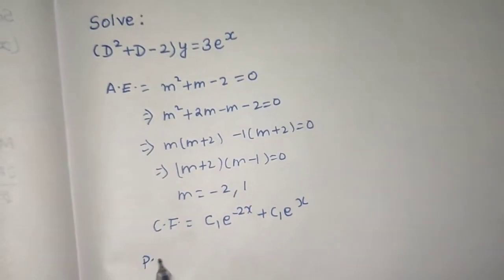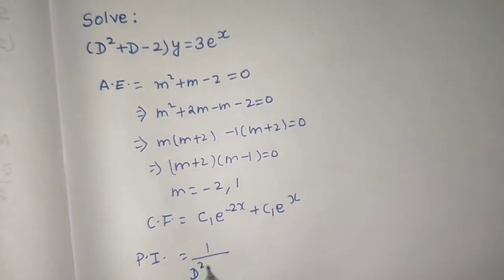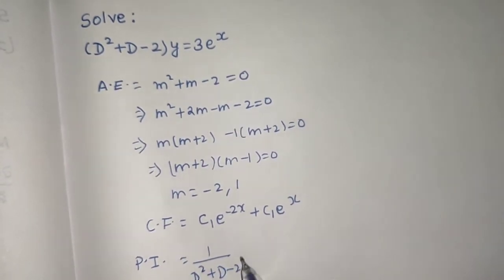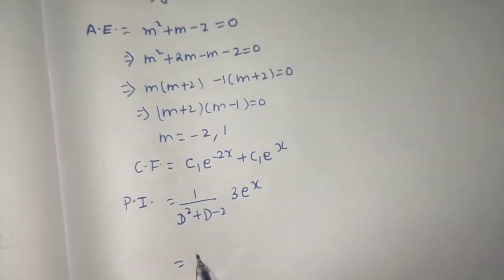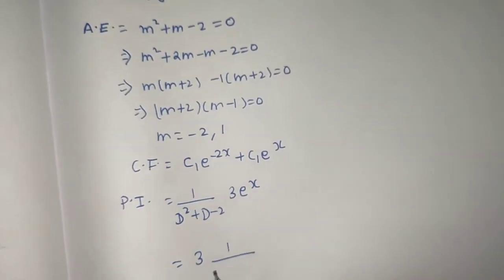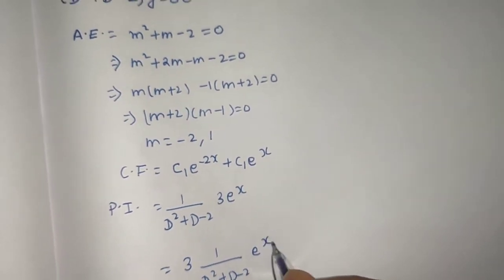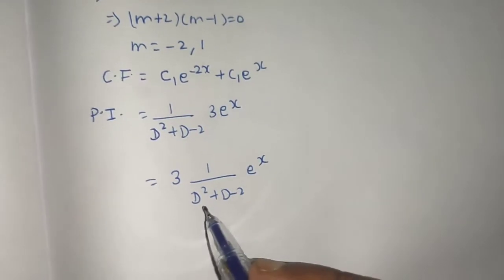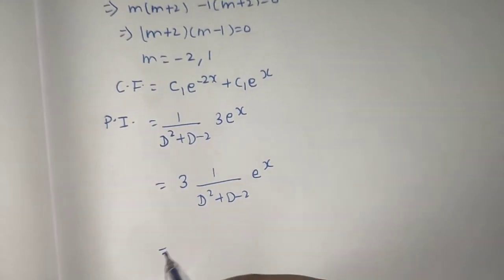What about the particular integral? That will be 1 upon f of d which is d square plus d minus 2 that will be operating on 3 e power x. 3 will come out 1 upon d square plus d minus 2 will be operating on e power x. If you put 1 here so 1 plus 1 2 minus 2 0 since this is becoming 0.